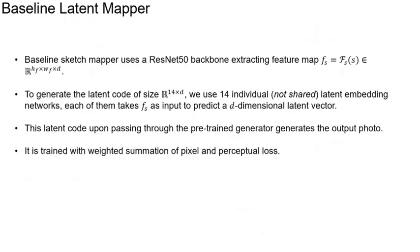Inspired by the GAN inversion literature, we design our baseline sketch mapper using a ResNet-50 backbone. To generate a latent code of size 14×D, we use 14 individual latent embedding networks, each taking the sketch features as input to predict a D-dimensional latent vector. Concatenating them results in a 14×D latent code, which upon passing through the pre-trained generator produces the output photo. Trained with a weighted summation of L2 pixel loss and perceptual loss, the baseline sketch mapper learns to map an input sketch to its corresponding photo in the manifold of a pre-trained StyleGAN.